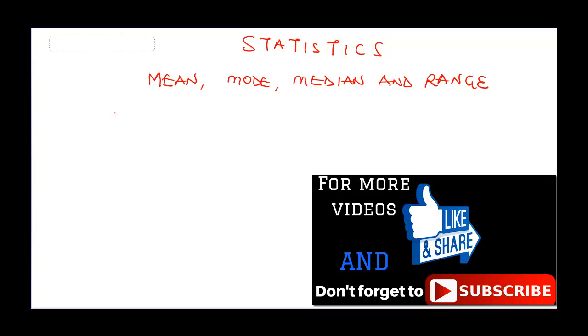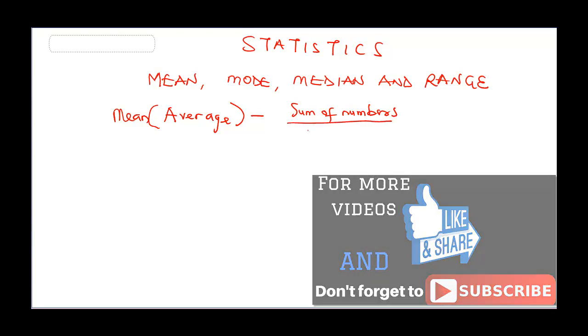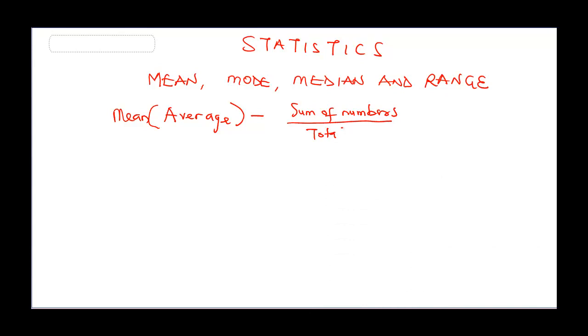The first one is mean. Another word for mean is also called average. How do you calculate the average of a number or the mean of a number? It is the sum of the numbers divided by total numbers. For you to calculate the average, for instance, if you're given calculate the average of 5, 4 and 6.